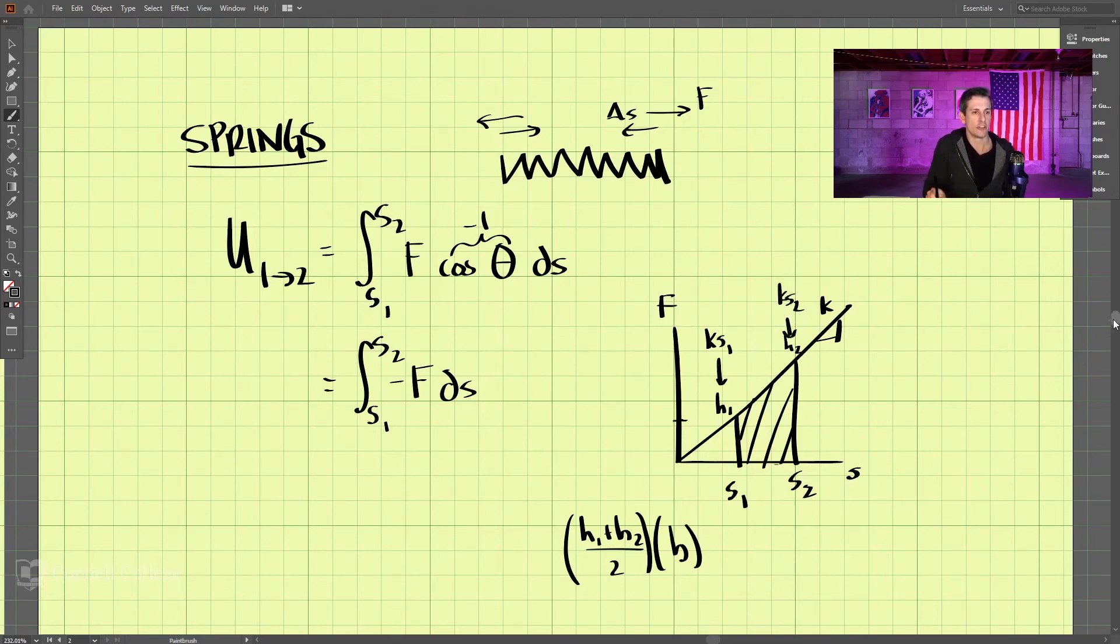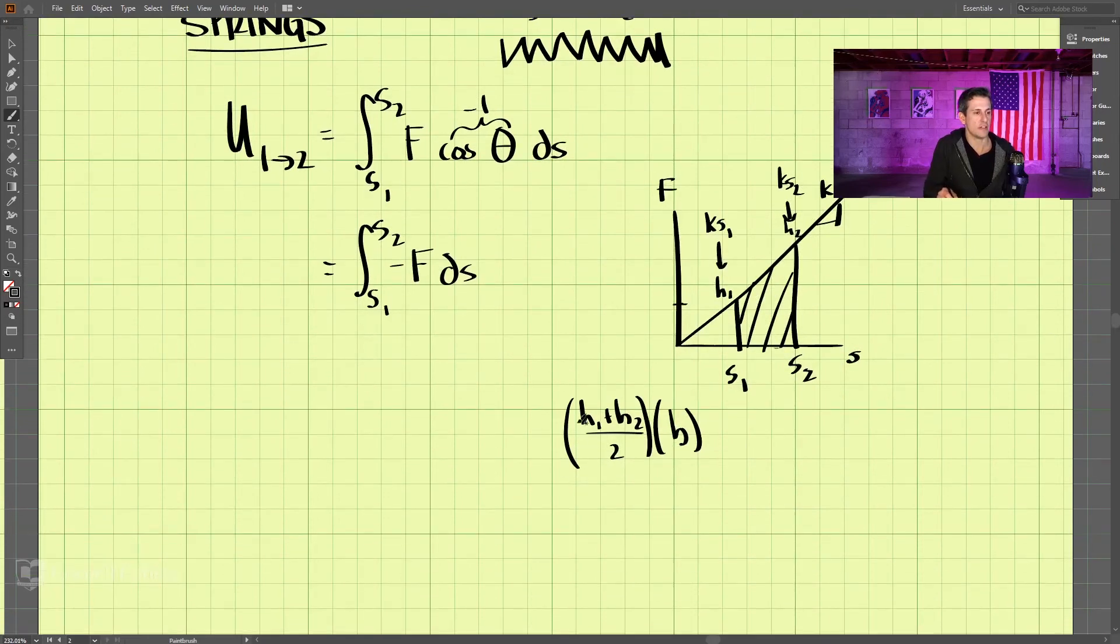So substituting these values into this equation here, let's write it out. h1 is ks1. h2 is ks2, and we divide that by 2. And then what is the base?